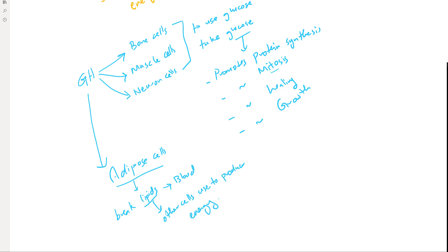Other cells will use those lipids to produce energy. The growth hormone also has a minor effect on immune cells — it calms them down. Why? Because there will be plenty of protein synthesis, plenty of mitosis, and plenty of activity. The immune cells sometimes get irritated by all of those activities, so we are telling them everything is under control. Those are the effects of the growth hormone — that is the glucose sparing effect.